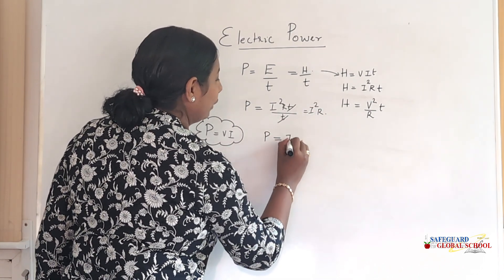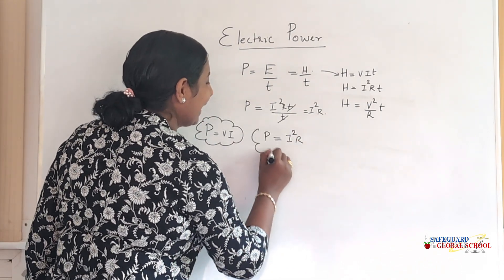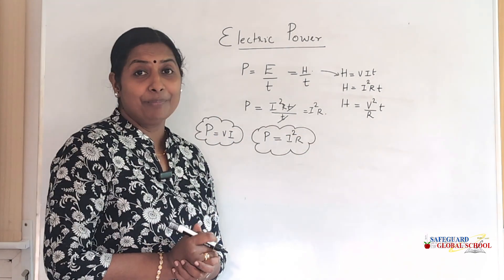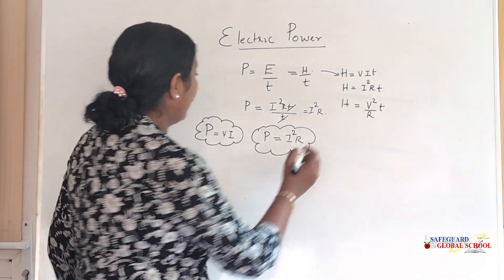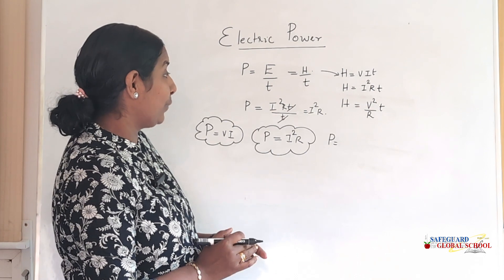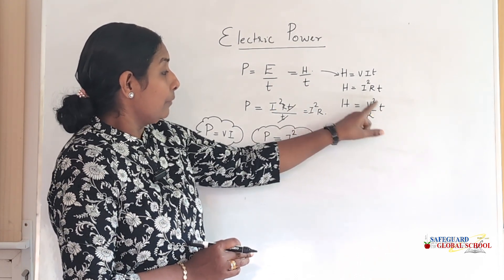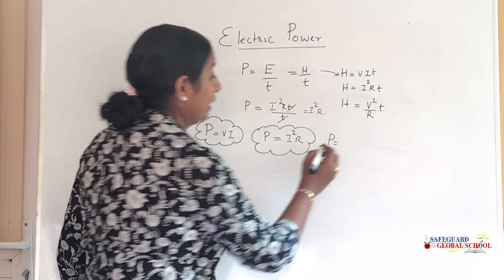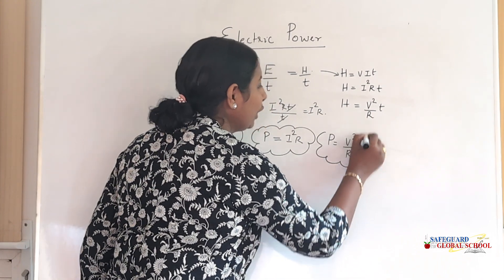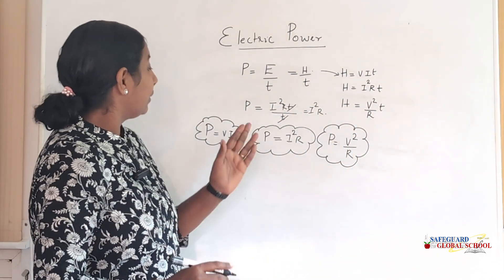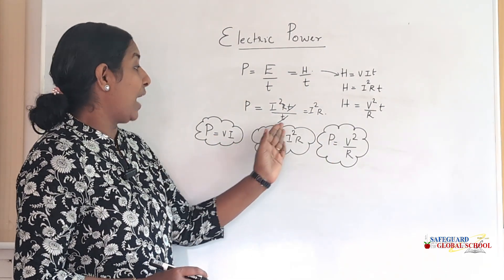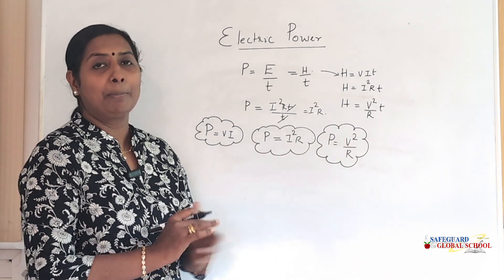So P = I²R is the second relation. For the third relation: substituting H = V²/R × T, dividing by T gives P = V²/R. So corresponding to the three equations for heat, we get three equations for power: P = VI, P = I²R, and P = V²/R.